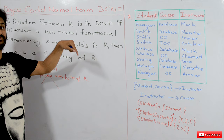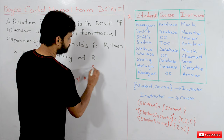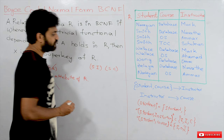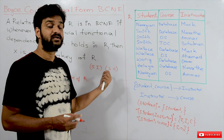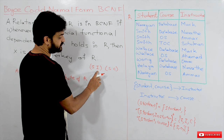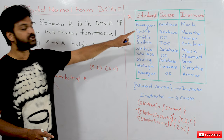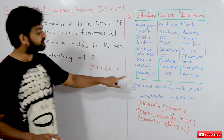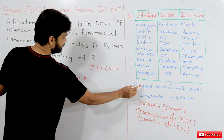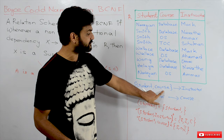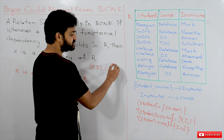Now we check these functional dependencies with respect to Third Normal Form. We have Student, Instructor and Student, Course as the two candidate keys. Every attribute of the relation — Student, Course, and Instructor — is involved in a candidate key, so every attribute is a prime attribute. According to Third Normal Form, we check whether any property is satisfied for each functional dependency.